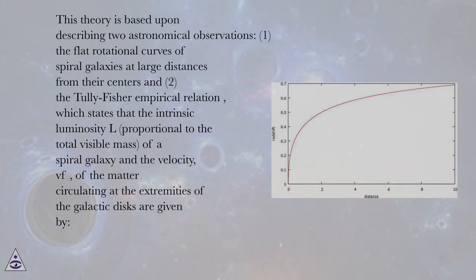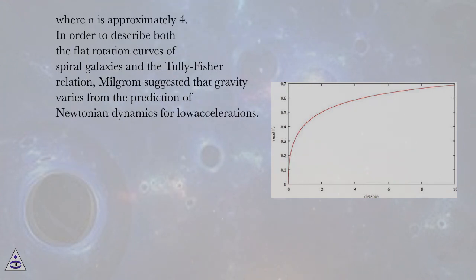The Tully-Fisher empirical relation states that the intrinsic luminosity L, proportional to the total visible mass of a spiral galaxy, and the velocity VF of the matter circulating at the extremities of the galactic disk are given by L proportional to VF to the alpha, where alpha is approximately four.